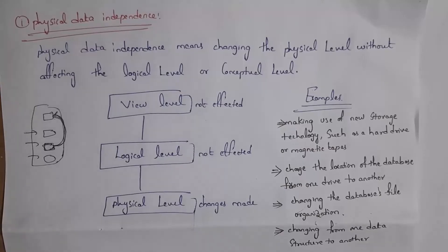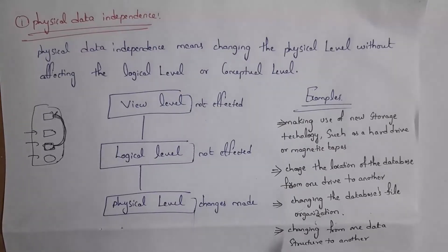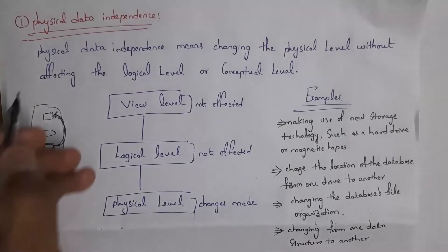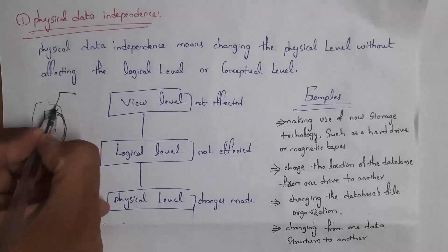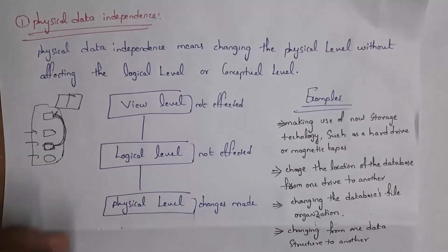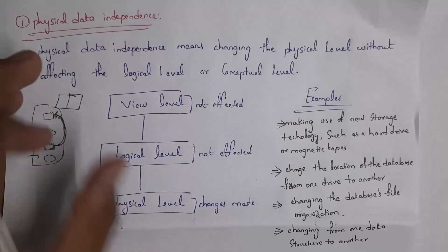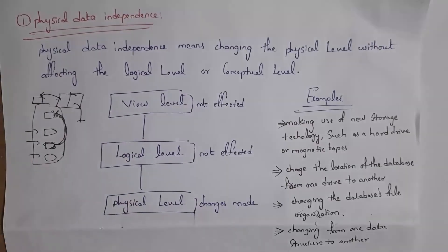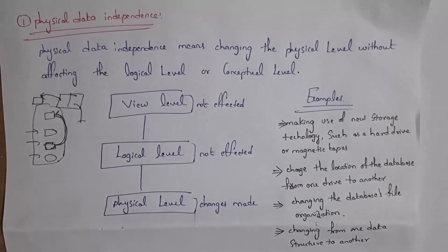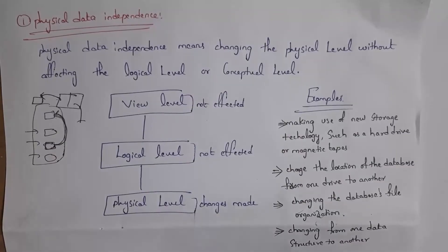Another example is changing the database file organization — for instance, moving a file from second position to first position. Even if we change database file organization, it will not affect the logical level or view level. Yet another example is changing from one data structure to another — for example, a database administrator divides one table into two parts. Even if we divide the table into two parts, it will not affect other levels. So changing structure at the physical level will not affect other levels. This is all about physical data independency.